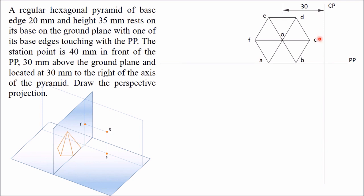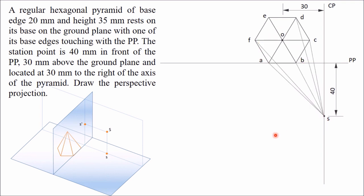In this central plane we can draw the top view of this station point. When you look from top, you get point S, and this distance — station point is 40 mm in front — so mark point S at a distance of 40 mm from the picture plane. Next you have to join this station point with all the corner points. I have joined all corner points, and these lines are visual rays.